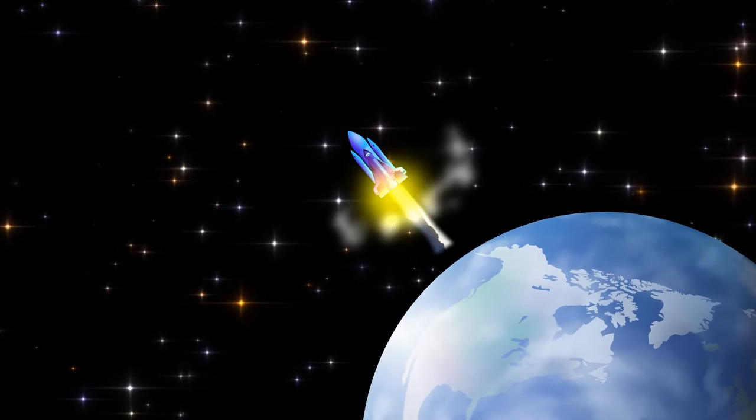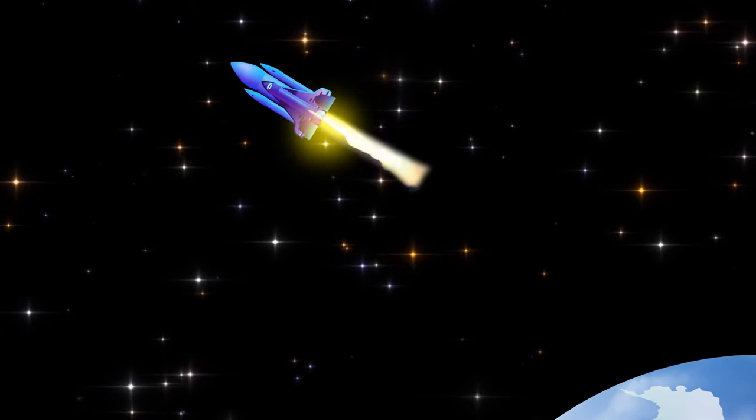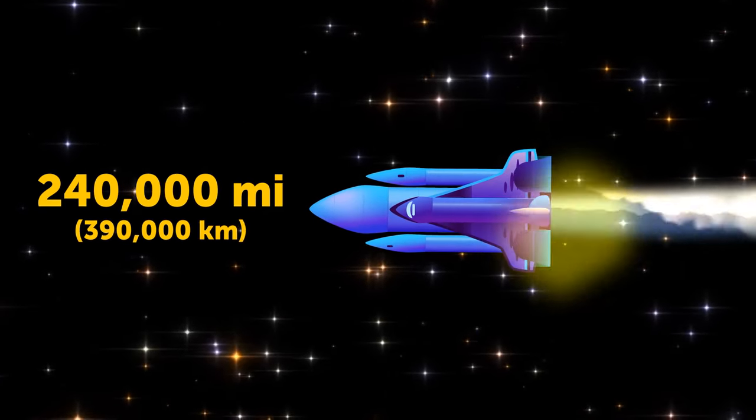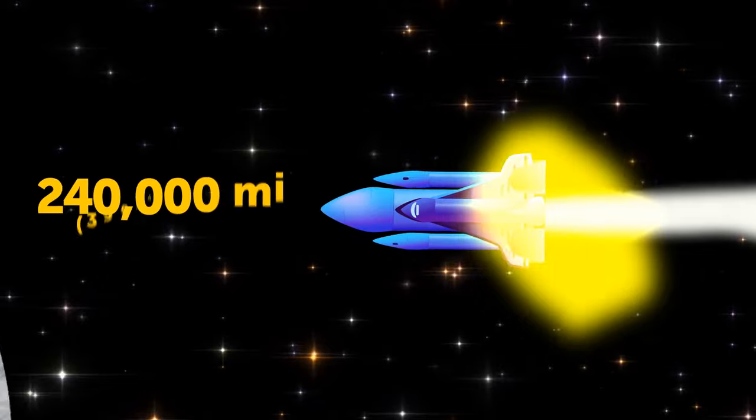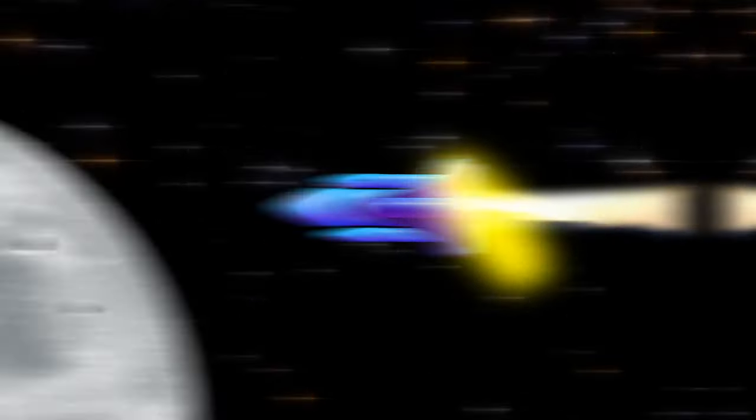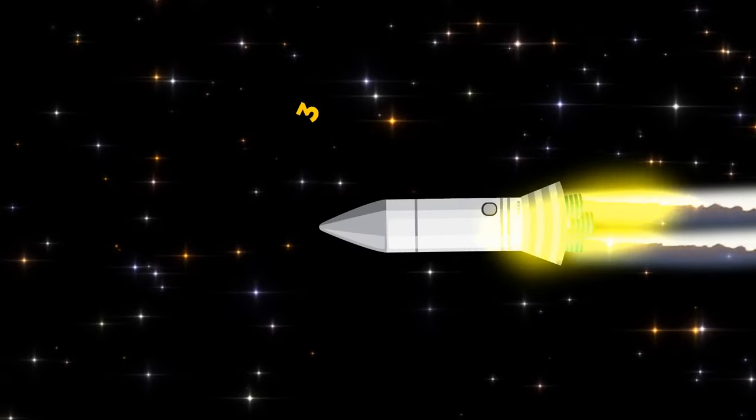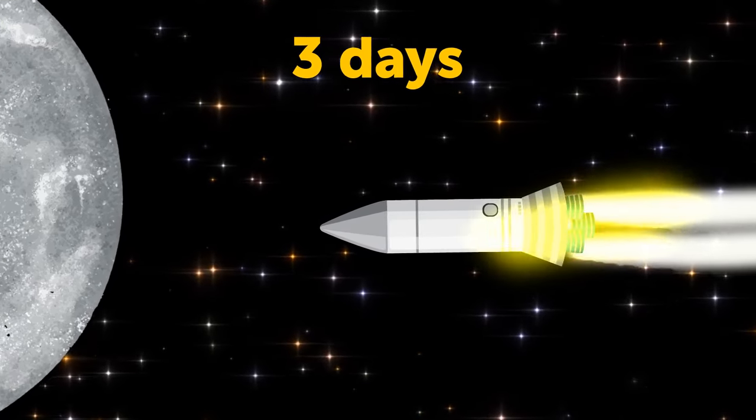We launch our faster-than-light spaceship and set off on our journey to Betelgeuse. A few seconds, and we've already traveled 240,000 miles, and now are close to the moon. That's nine and a half trips around the Earth. A traditional rocket-powered spacecraft would take three days to get here.